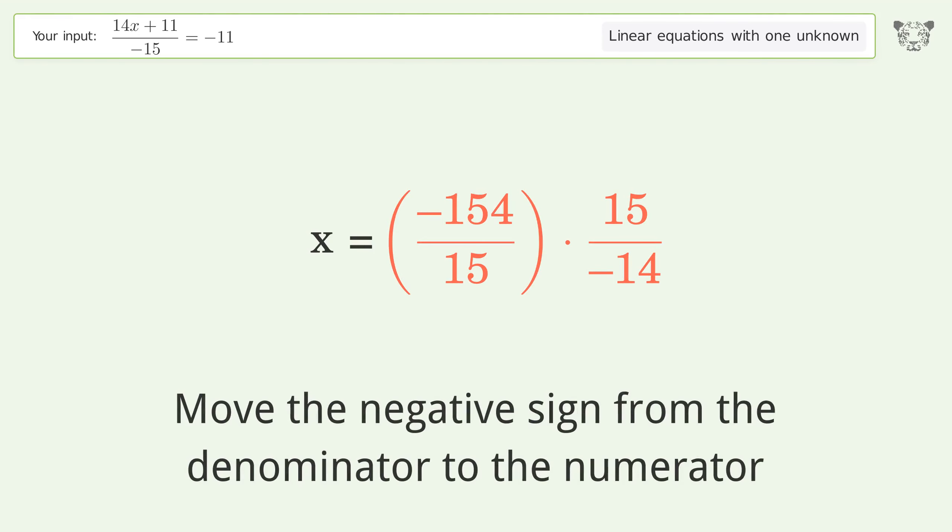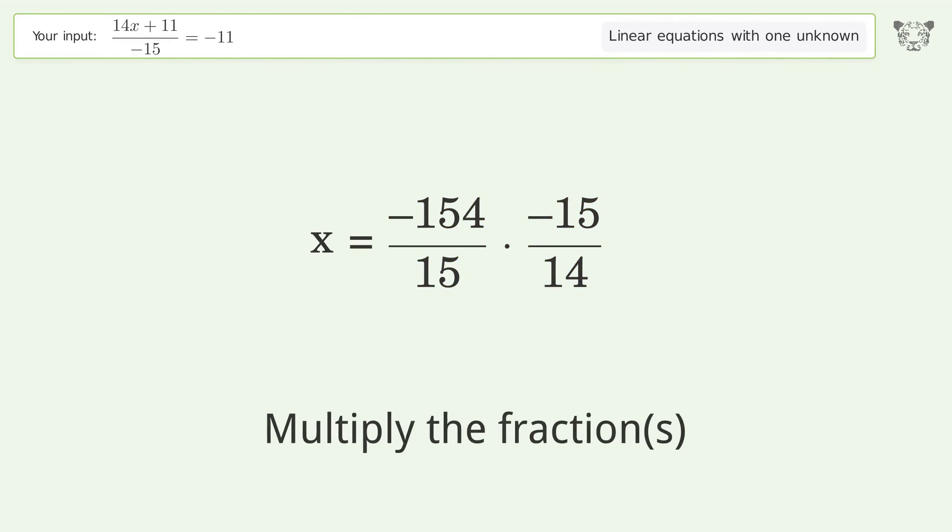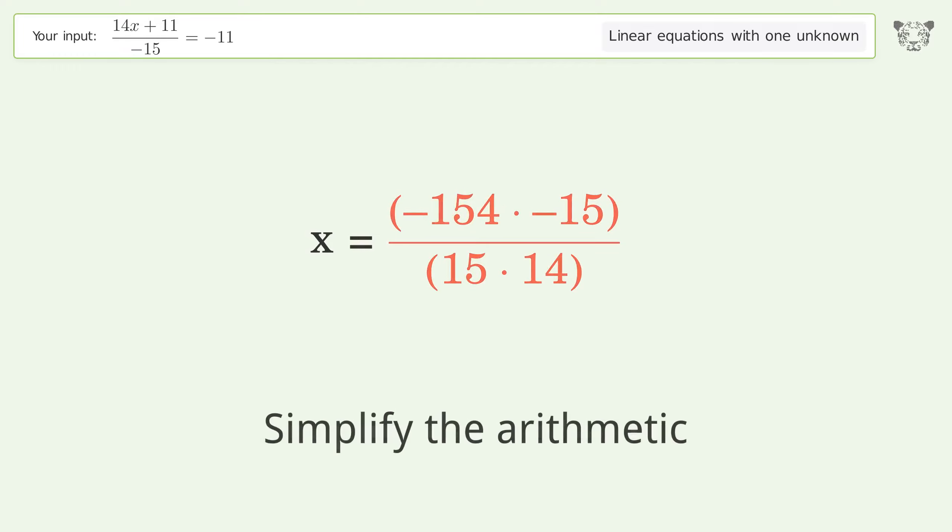Move the negative sign from the denominator to the numerator. Multiply the fractions. Simplify the arithmetic. And so the final result is x equals 11.